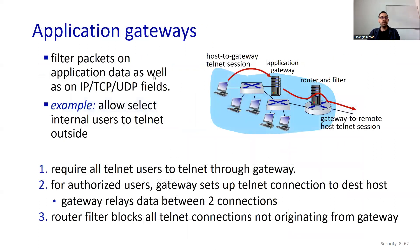Application gateways are more powerful — they filter packets on application data as well as IP, TCP, and UDP fields. For example, to allow select internal users to Telnet outside: require all Telnet users to Telnet through the gateway. Everyone first connects to the application gateway, then goes to the internet. For authorized users, the gateway sets up the Telnet connection to the destination host and relays data between the two connections. The router filter blocks any Telnet connections not originating from the gateway, so devices must go through the application gateway to use Telnet.